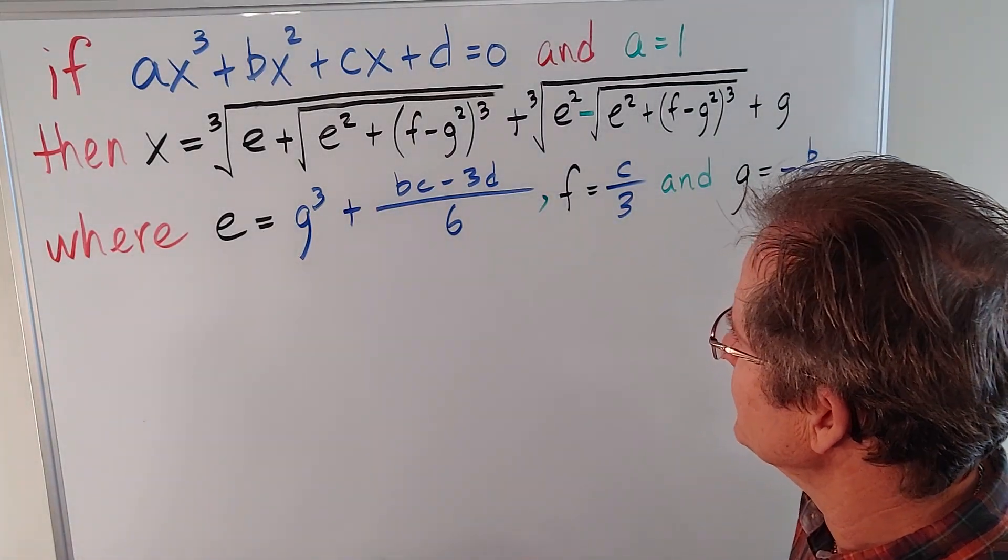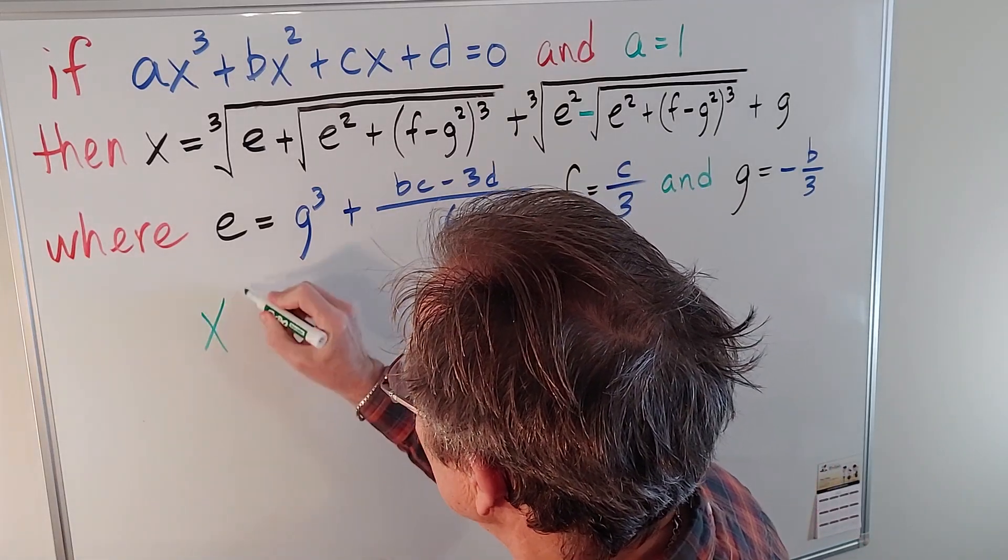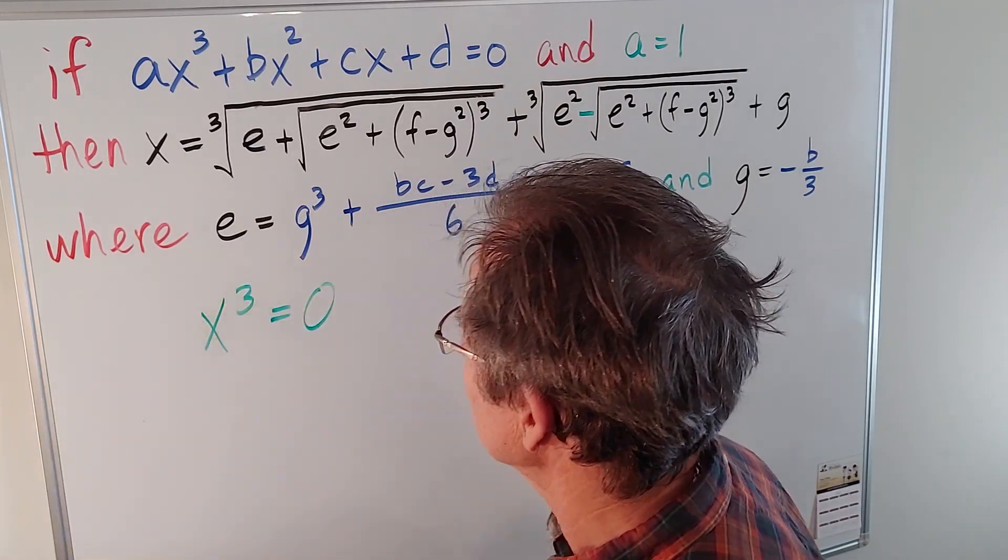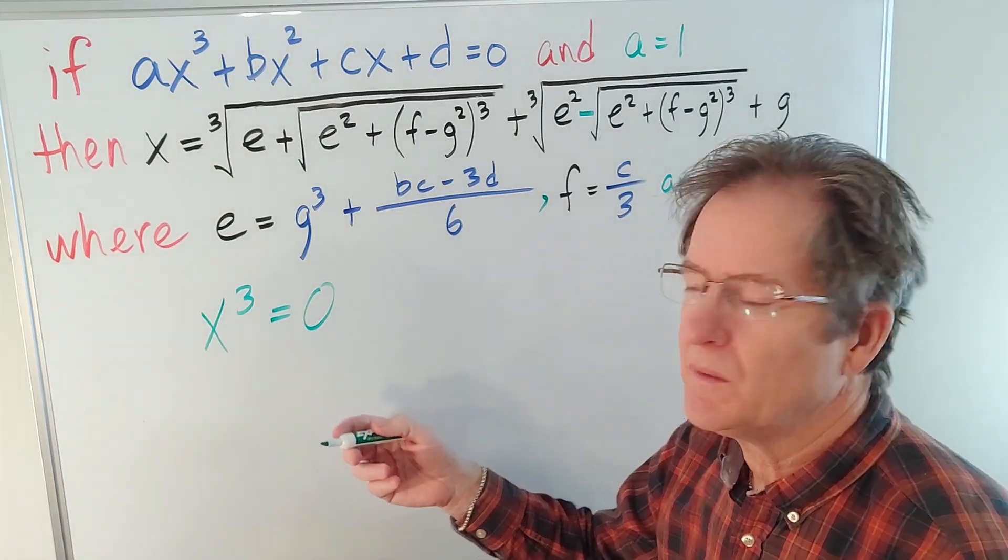Okay, so let's look at some examples. Let's start off really easy. Let's say x cubed equals 0. I choose this one because we all know the only answer is x equals 0.